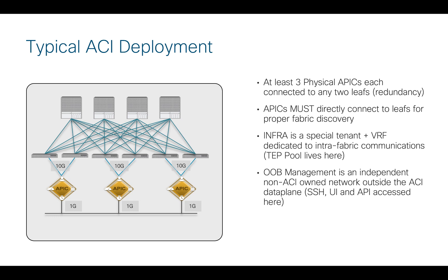In a typical deployment, we have our leaves and our spines, and we have at least three physical APICs connected across any two leaves for redundancy. Those APICs have to be directly connected to the leaves for us to properly and securely do fabric discovery. Those are always the 10-gig ports on the back of the APIC that we connect to those leaves.